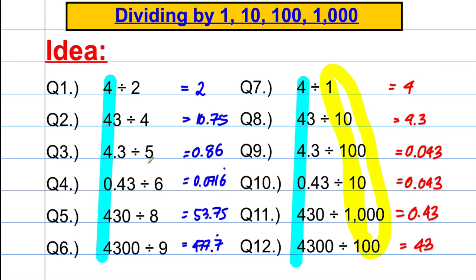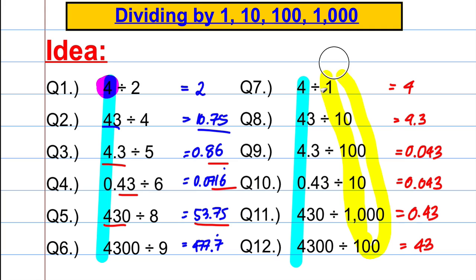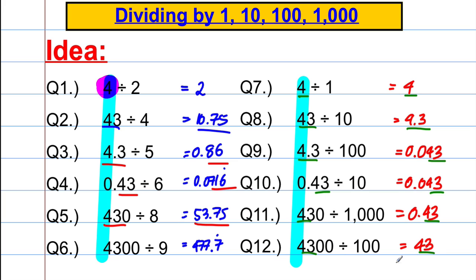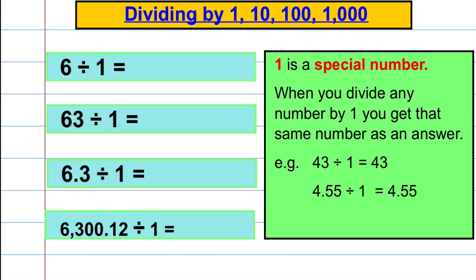When I divide by any number that's not a power of ten, I get digits back that don't look anything like the original question. But when I divide by a power of ten, I get the same digits in my answer. I had a 4 in my original question and I get a 4 in my answer. I had a 4 and a 3, I get a 4 and a 3 — and so on. So just like with multiplication, dividing by one, ten, a hundred, and a thousand is really straightforward because I get the same digits; it's just a difference of where the decimal point is.